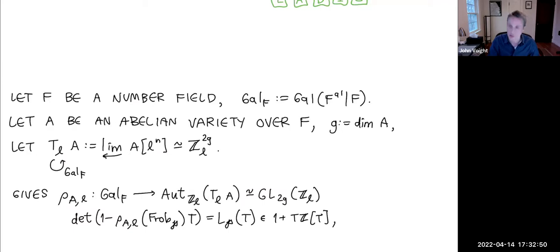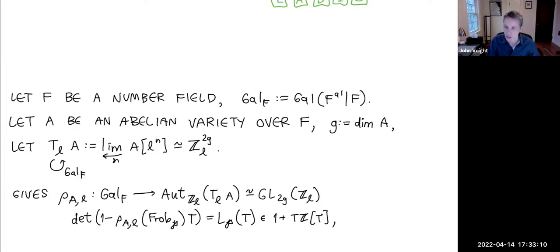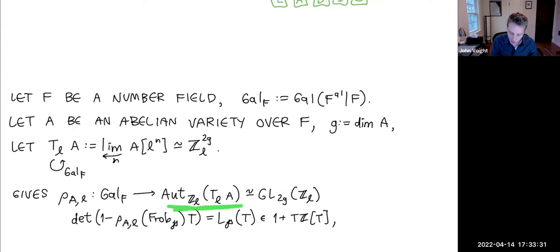Abelian varieties are tricky, so one of the first things you do is linearize by taking the Tate module: the limit of the ℓ^n torsion over n. It naturally carries a Gal(F) action; at the same time it's a free Z_ℓ-module of rank 2g. Understanding A via the representation of the Galois group on T_ℓ(A) is a very good idea for applying linear algebra techniques.